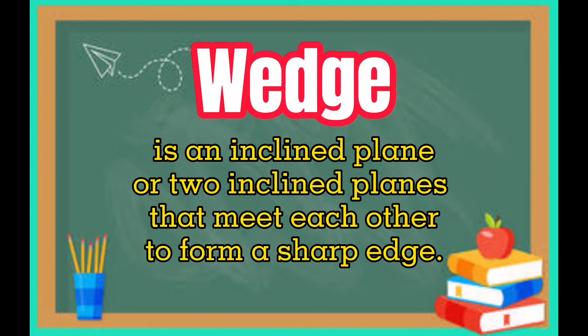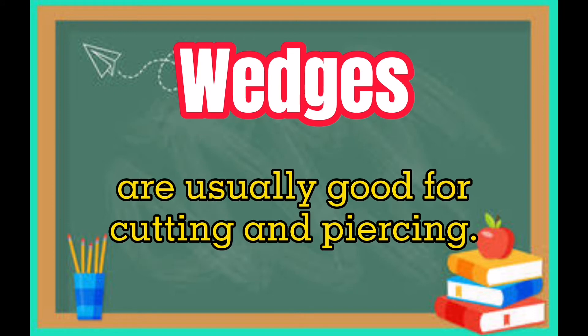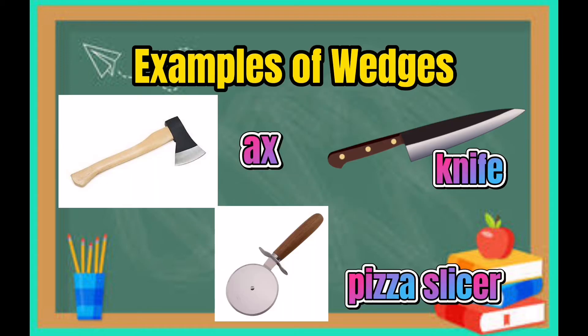Wedge. It is an inclined plane or two inclined planes that meet each other to form a sharp edge. Wedges are usually good for cutting and piercing. Examples of wedges are axe, pizza slicer, and knife.